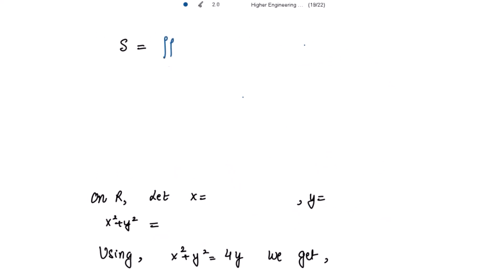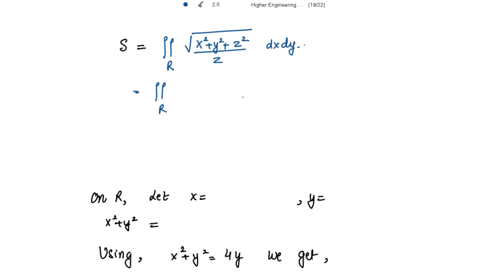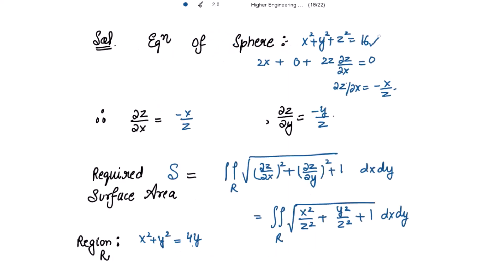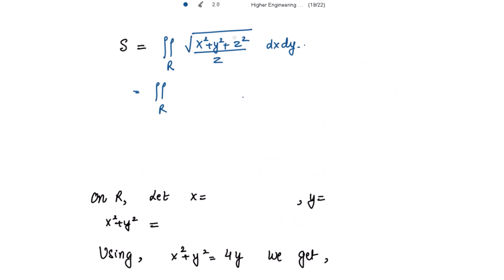Taking the LCM under the square root gives √((x² + y² + z²)/z²). The square root of z² is simply z, so this becomes (x² + y² + z²)/z · dx dy. Since x² + y² + z² = 16 from the sphere equation, this simplifies to 4/z · dx dy.